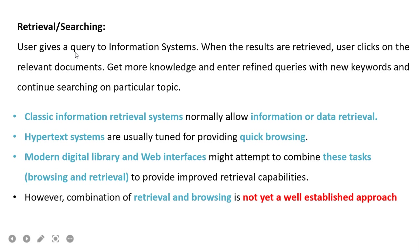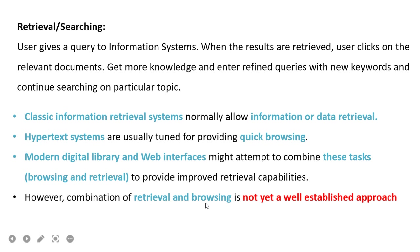In retrieval and searching, the user gives a query to the information system with a fixed topic. When results are retrieved, the user clicks on relevant documents, gains knowledge, and enters refined queries with new keywords. Three types of systems exist: classical IR systems for data retrieval, hypertext systems for quick browsing, and modern digital library and web interfaces which combine both browsing and retrieval to provide improved retrieval capabilities.